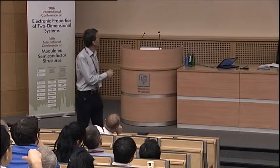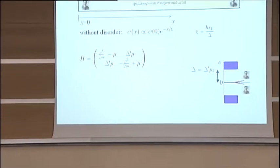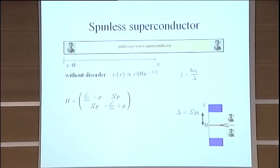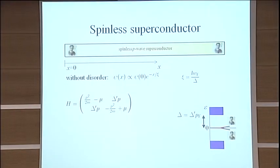So here we are. This is our one-dimensional spinless p-wave superconducting wire. And as I said, we know in the end, we have our Majorana bound states. These are localized states, and the localization length is the superconducting coherence length, which I call Xi. So it's h-bar Vf divided by the superconducting gap in the spinless p-wave superconductor.